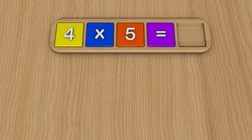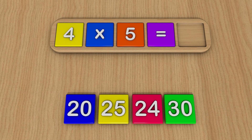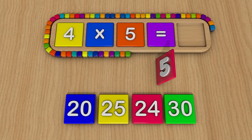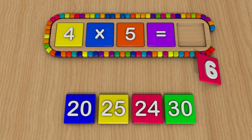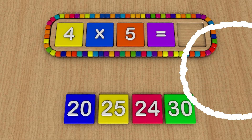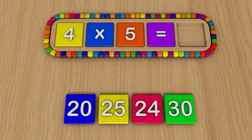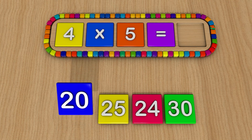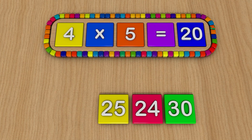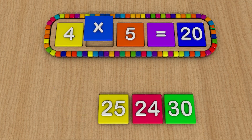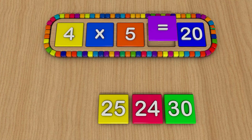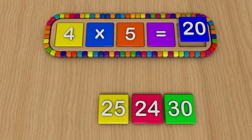4 times 5 equals... 20. 4 times 5 equals 20.